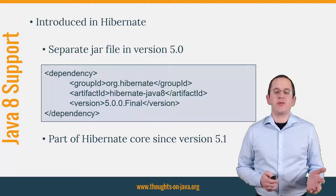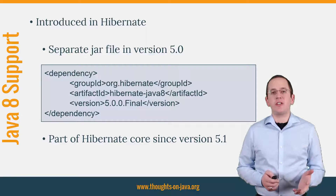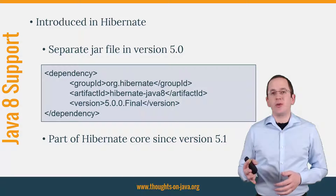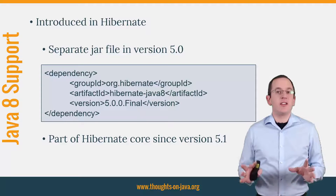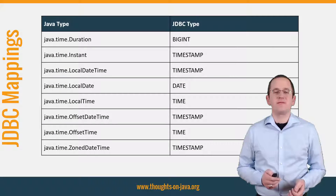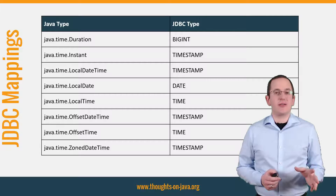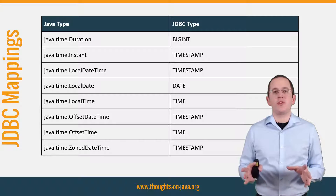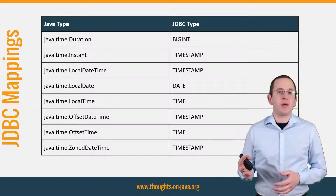Hibernate 5 introduced the support for different Java 8 classes and shipped it in a separate JAR file in version 5.0. You needed to add this file to the classpath for your application if you wanted to use the new data types. Since version 5.1, this is no longer necessary — the Java 8 support has become part of the Hibernate core distribution. Hibernate supports the classes of the Date and Time API as basic types, so you don't need to provide any additional mapping annotations. It gets all required information from the Entity Attribute type and maps them to the JDBC types you can see here on the slide.